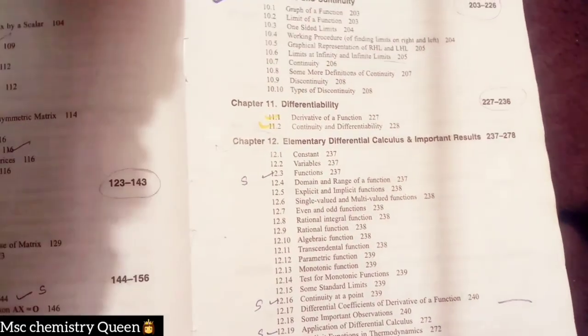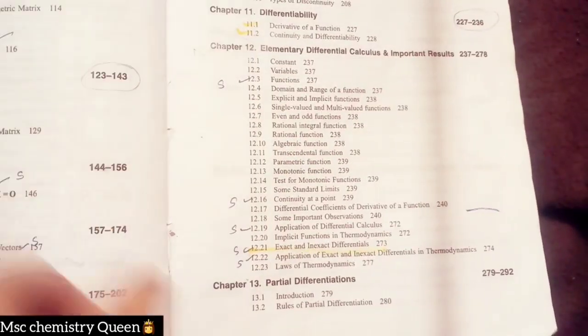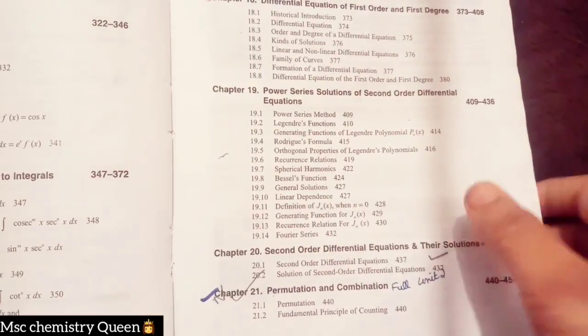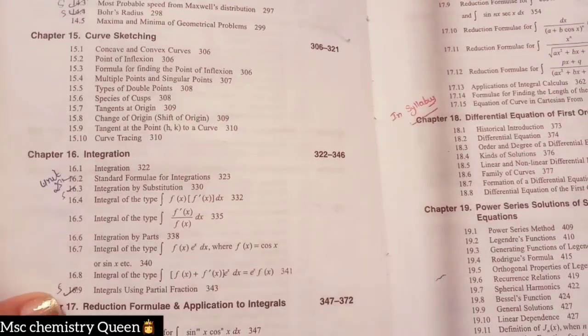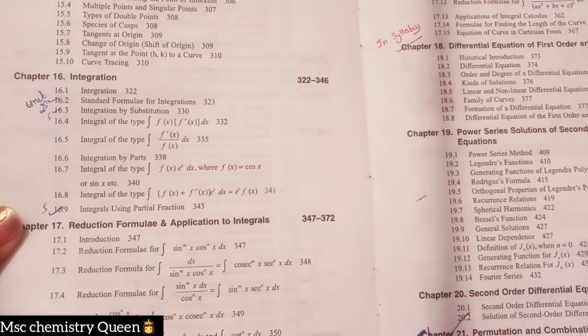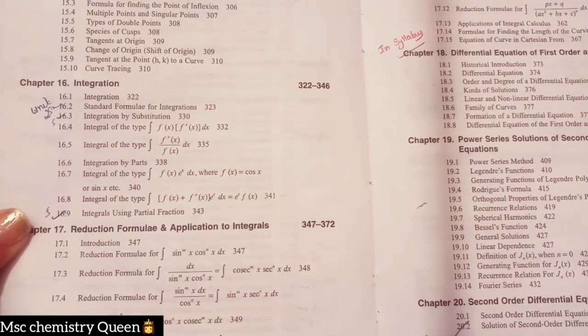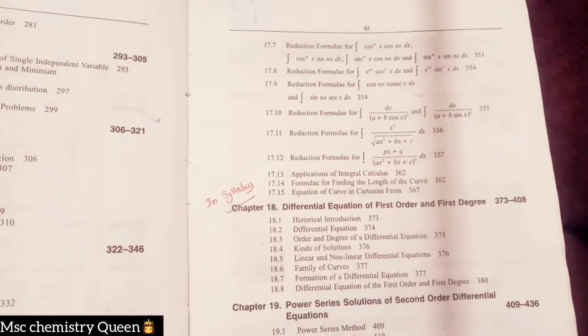The other thing is Differentiability, Limits and Elementary Differential. So I have covered Determinant, Vector, Matrix, Probability and Definitions.